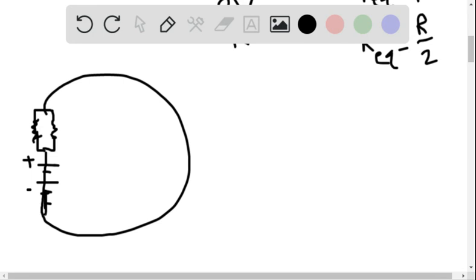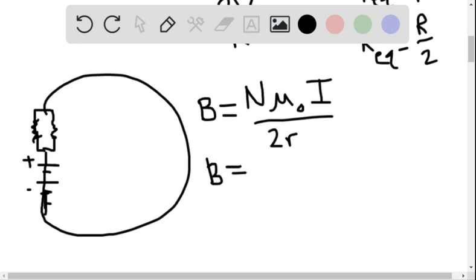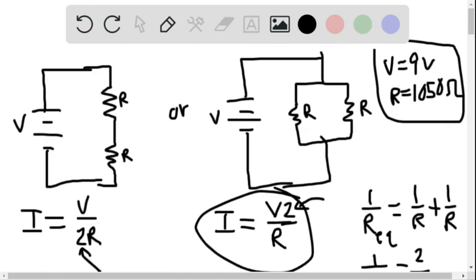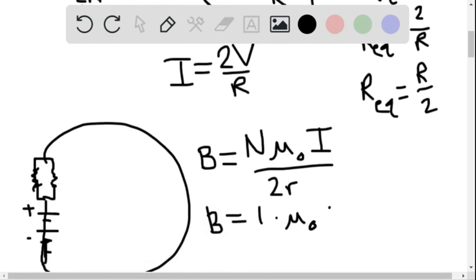Then the magnetic field would be N mu zero I over 2R. 1 mu zero I. And we already know that I is going to be 2V over R.